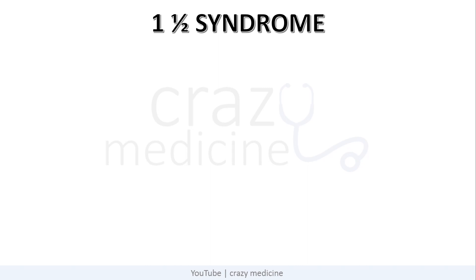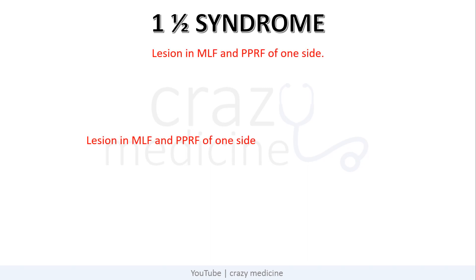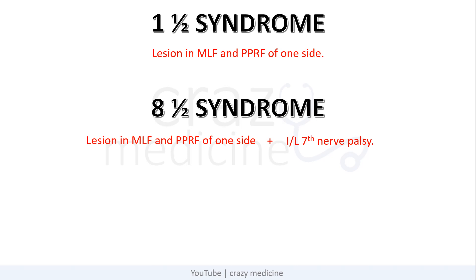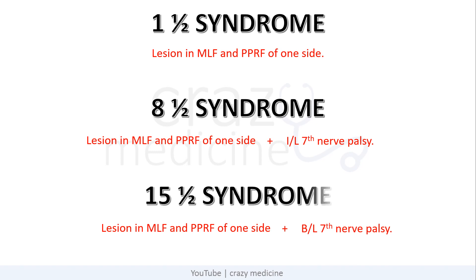We already discussed 1.5 syndrome — lesion in MLF and PPRF of one side. If there is also a lesion causing ipsilateral 7th nerve palsy, it is called 8.5 syndrome. And if there is bilateral 7th nerve palsy along with one-sided MLF and PPRF lesion, it is called 15.5 syndrome. These 8.5 and 15.5 syndromes are not described in standard textbooks, but there are certain articles in PubMed which I have referred to, so there may be questions on this.